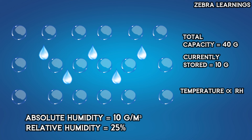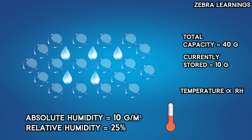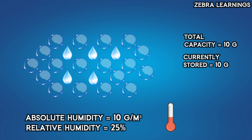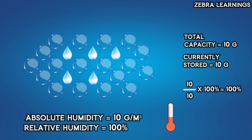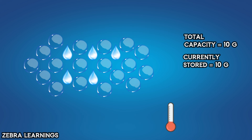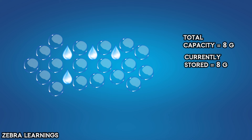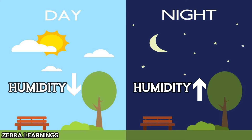For example, the air currently holds 10 grams of water vapor. If the temperature drops to a point where the air can only hold a maximum of 10 grams, the relative humidity will be 100%. If the temperature drops even further, the air's capacity might decrease to 8 grams. In this case, 2 grams of the existing water vapor will condense and turn into liquid water. This phenomenon explains why humidity levels are generally lower during warmer mornings and higher during cooler nights.